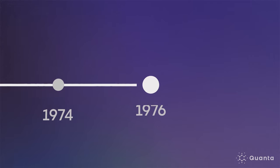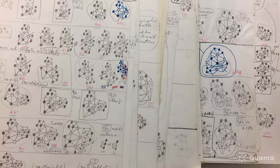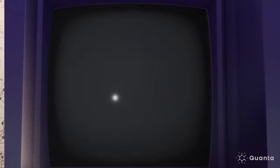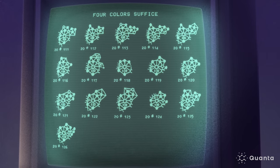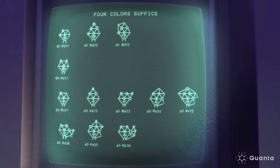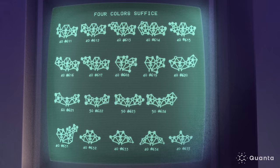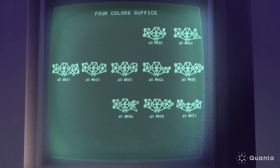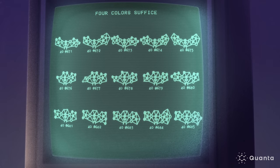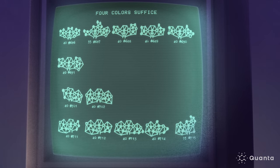In 1976, after about six months of work and more than a thousand hours of computer time, they proved the four-color theorem. Haken and Appel found an unavoidable set consisting of 1,936 reducible configurations. Every map has to have at least one of these configurations, and any map that does can be colored with four or fewer colors. Far too many for any human or even team of humans to check by hand.